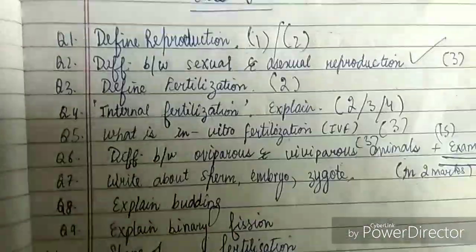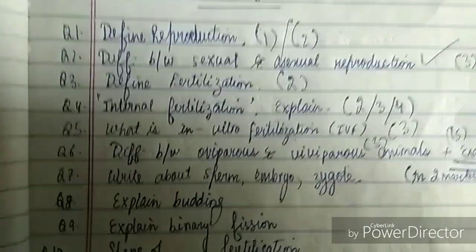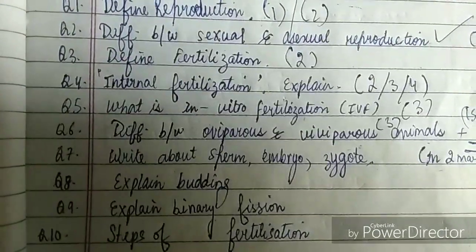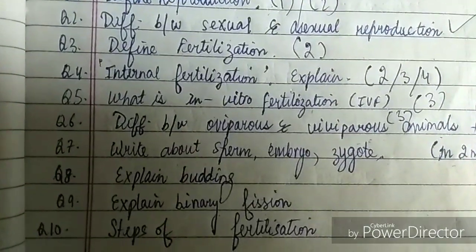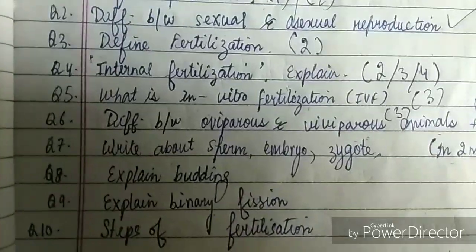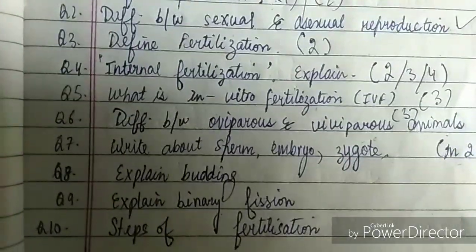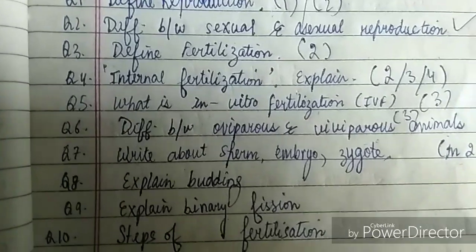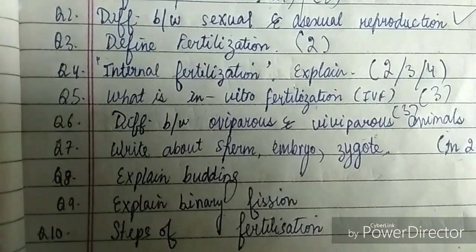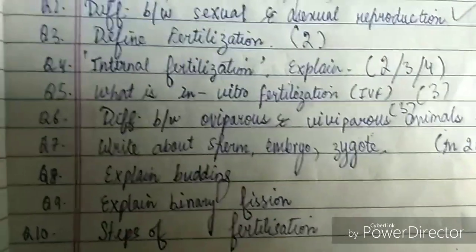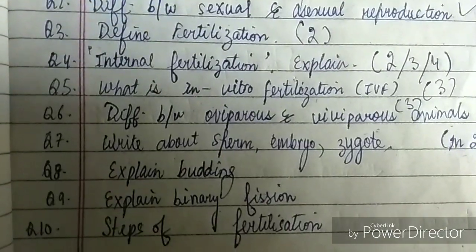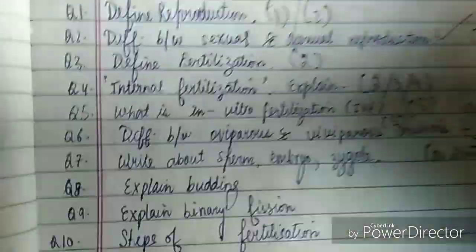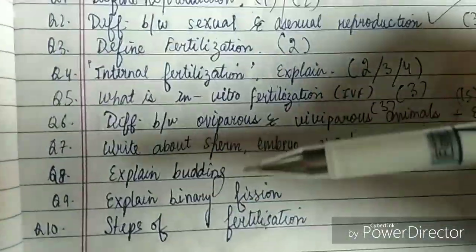After that, write about sperm, embryo, zygote, or gamete — these kinds of terms are very common in this chapter. These can be asked for two marks each, or as one-word questions for one mark.